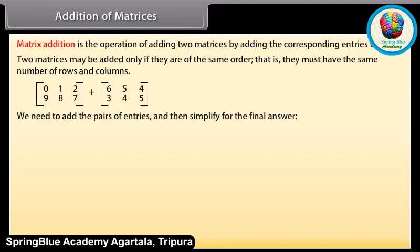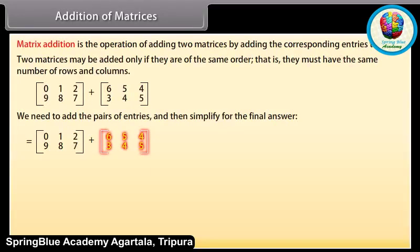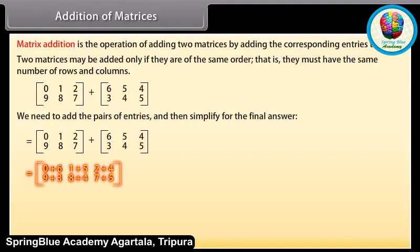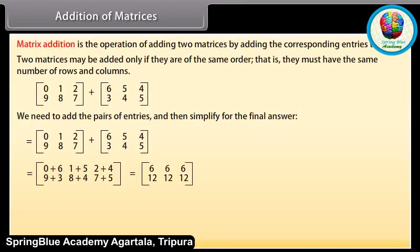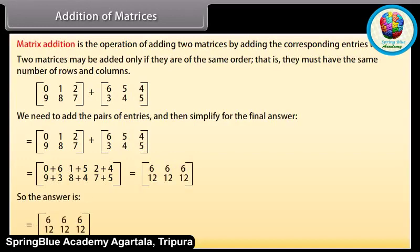We need to add the pairs of entries and then simplify for the final answer. The first matrix has first row 0, 1, 2 and second row 9, 8, 7. The second matrix has first row 6, 5, 4 and second row 3, 4, 5. Adding corresponding entries: first row gives 0+6=6, 1+5=6, 2+4=6; second row gives 9+3=12, 8+4=12, 7+5=12. So the answer is the matrix with first row 6, 6, 6 and second row 12, 12, 12.